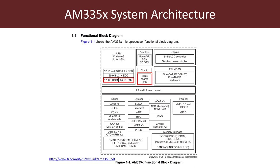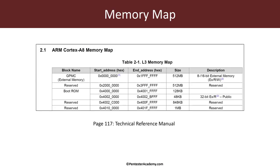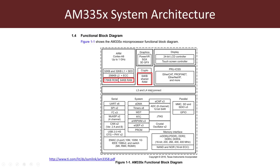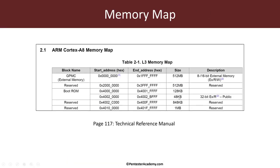The key takeaway is we have a very small ROM and a very small internal RAM. If we look at the Cortex-A8's memory map, the boot ROM is the one we were talking about — 176 KB. Looking at the next slide, you'll see 128 plus 48 equals 176, so this entire section is the boot ROM, and that is the place where execution begins after the processor resets.